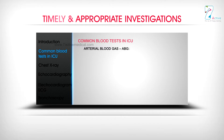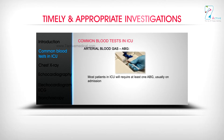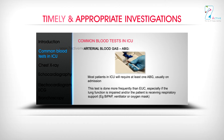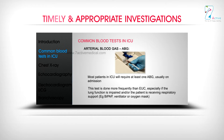Arterial Blood Gas: Most patients in ICU will require at least one ABG, usually on admission. This test is done more frequently than EUC, especially if the lung function is impaired and/or the patient is receiving respiratory support, for example, BIPAP, ventilator, or oxygen mask.